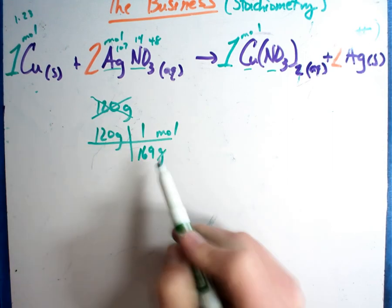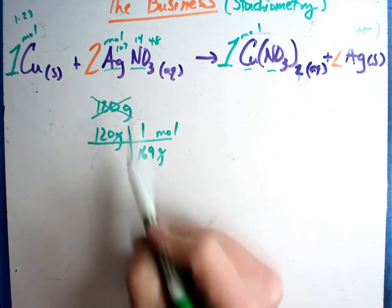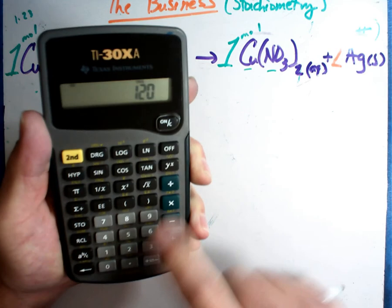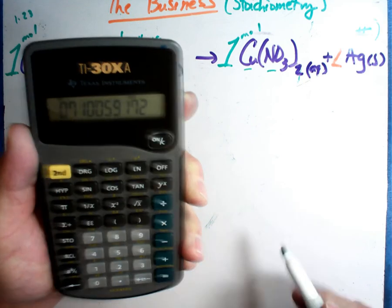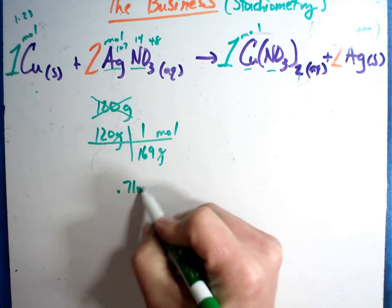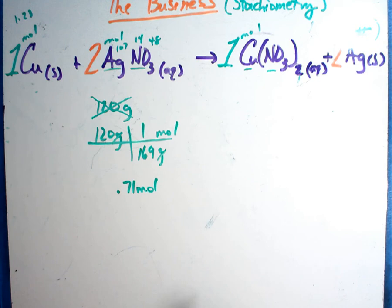So what I'm doing is I'm changing this grams to moles. So 120 divided by 169 is 0.71 moles. Now the question is, can I work? Can I work the problem? Absolutely, because I'm in the right units. The magic unit is moles.